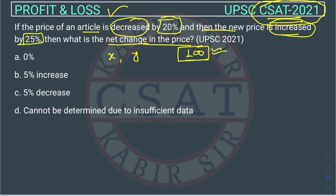So we will assume that the initial price of an article is 100, and then it got decreased by 20%.